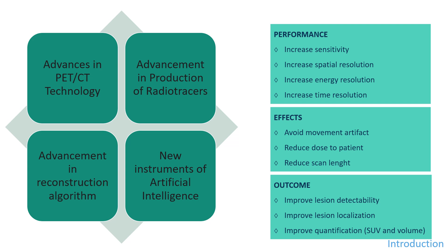Over the years we have faced many advances in positron tomography that can be grouped in four main categories: advances in technology (mainly in detector configuration), advances in production of radiotracers, advances in algorithms for data management and image reconstruction, and the introduction of new instruments of artificial intelligence. The purposes of these advances are to increase scanner performance in terms of sensitivity, spatial resolution, energy resolution, and time resolution. The effects of improvements lead to avoiding movement artifacts, reducing dose to patients, reducing acquisition time, and all these bring about an improvement in lesion detectability and localization, and a more accurate quantification.